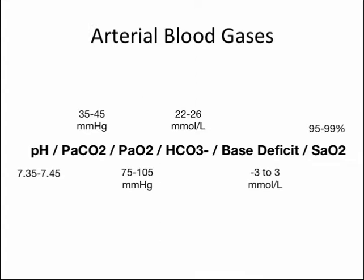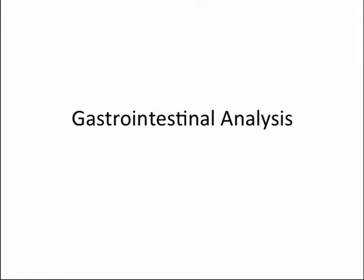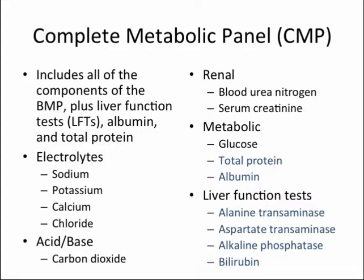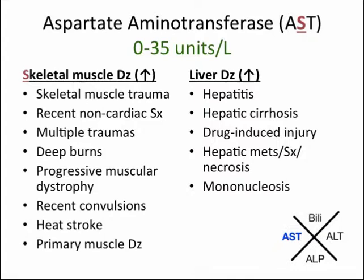Now we will move on to gastrointestinal labs. The complete metabolic panel, or CMP, includes all components of the basic metabolic panel plus liver function tests, albumin, and total protein. The first liver function test is aspartate aminotransferase, or AST — also known as aspartate transaminase. This lab sheds light on potential liver problems; note that AST is also elevated in skeletal muscle diseases. A good way to remember this is to correlate the 'S' in AST with skeletal muscle. Alanine aminotransferase, or ALT — also known as alanine transaminase — is found predominantly in the liver and is more specific to the liver than AST. Correlate the 'L' in ALT with liver.